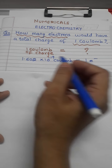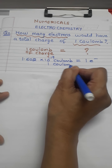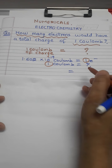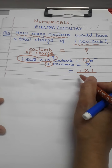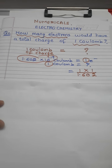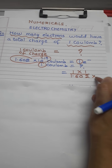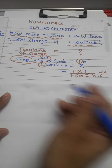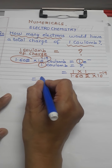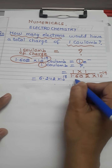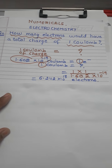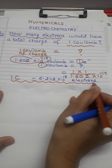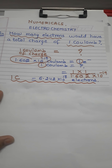So it becomes easy: 1 coulomb charge would be carried by how many electrons? We will just cross-multiply: 1 × 1 upon 1.602 × 10⁻¹⁹. You have to solve this using logarithm or tables. The answer is 6.242 × 10¹⁸ electrons. So 1 coulomb charge would be carried by 6.242 × 10¹⁸ electrons.